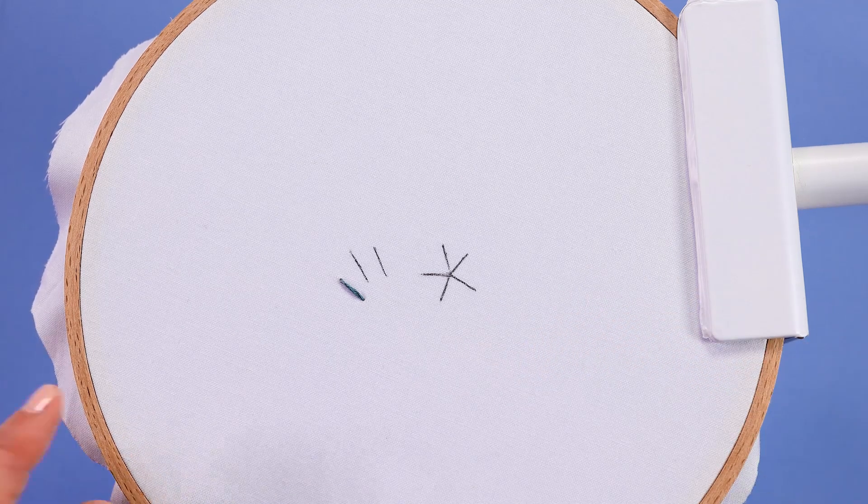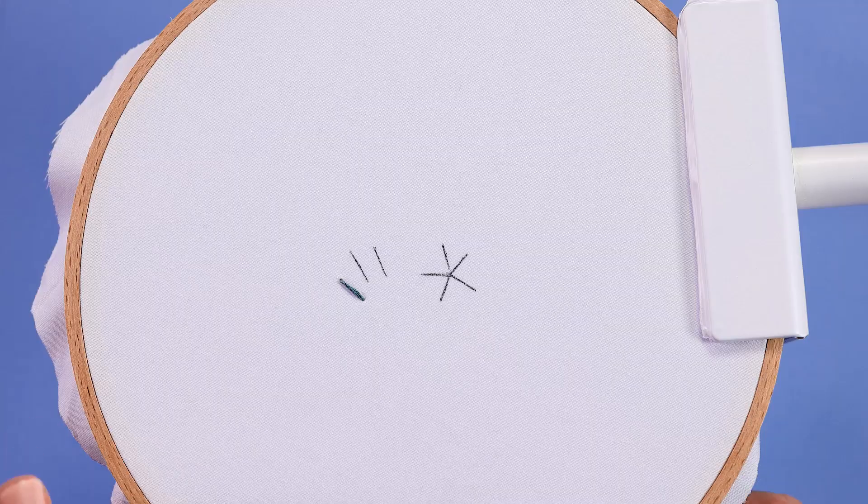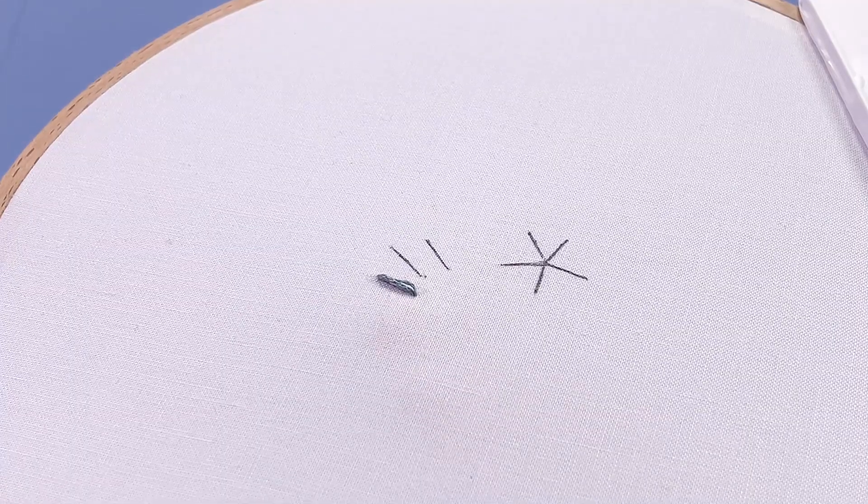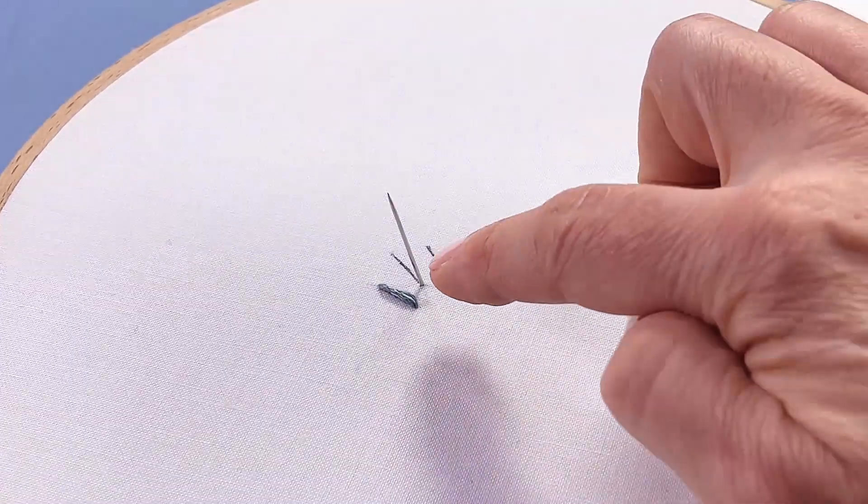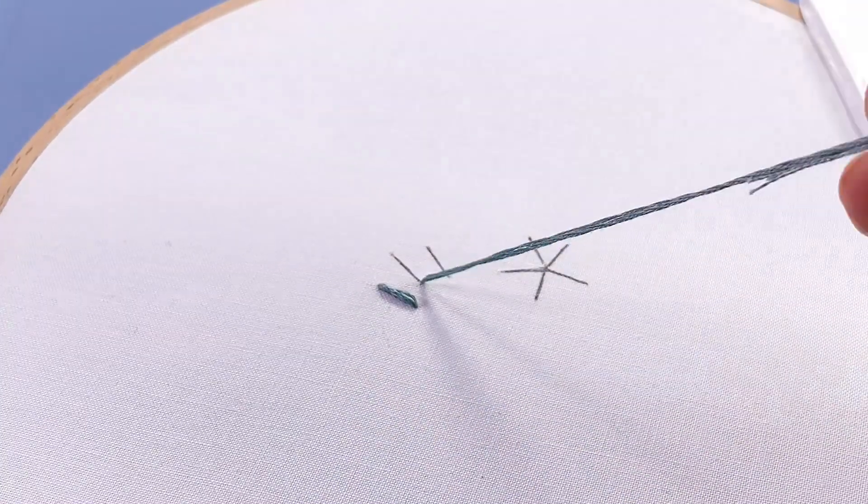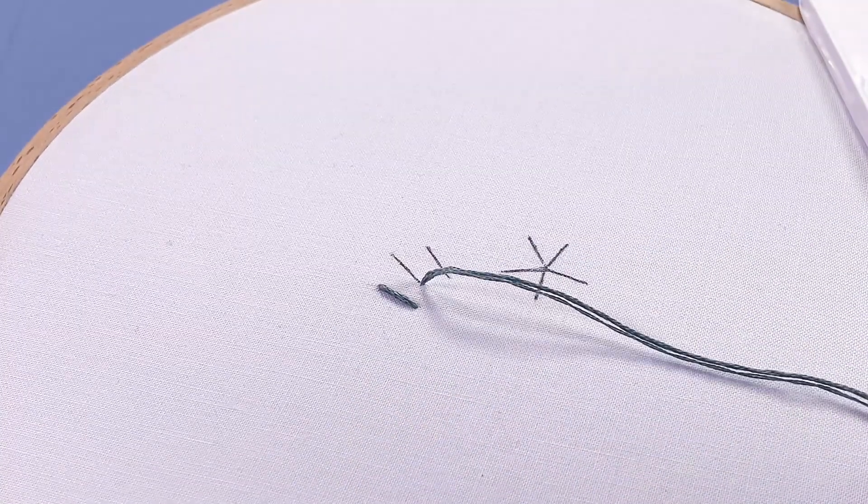Now let's move on to the second stitch. I'm going to choose the point that's closest to where I just finished. So bring your needle up at one side of the next stitch and once again, just draw through all that working thread to the top.